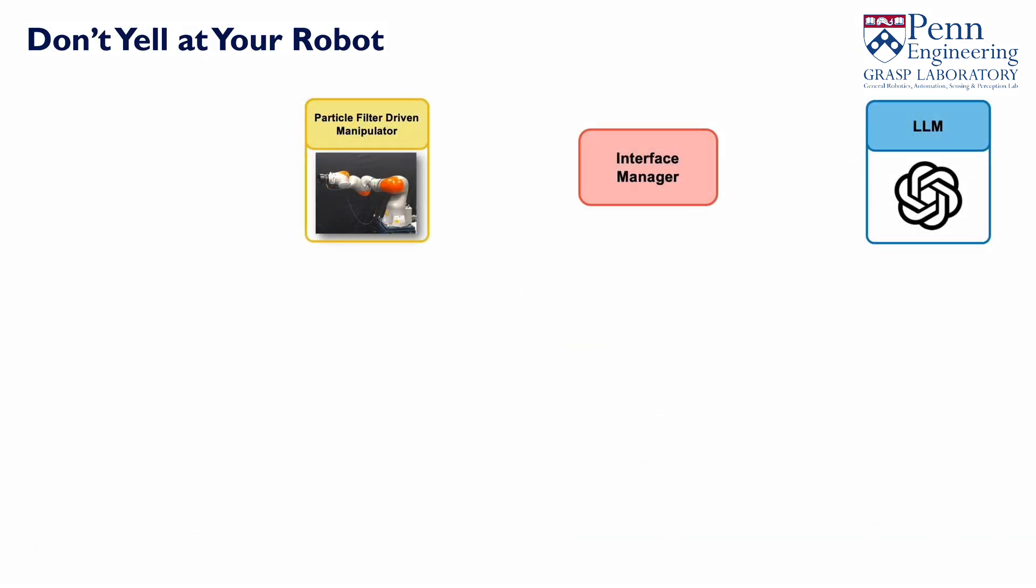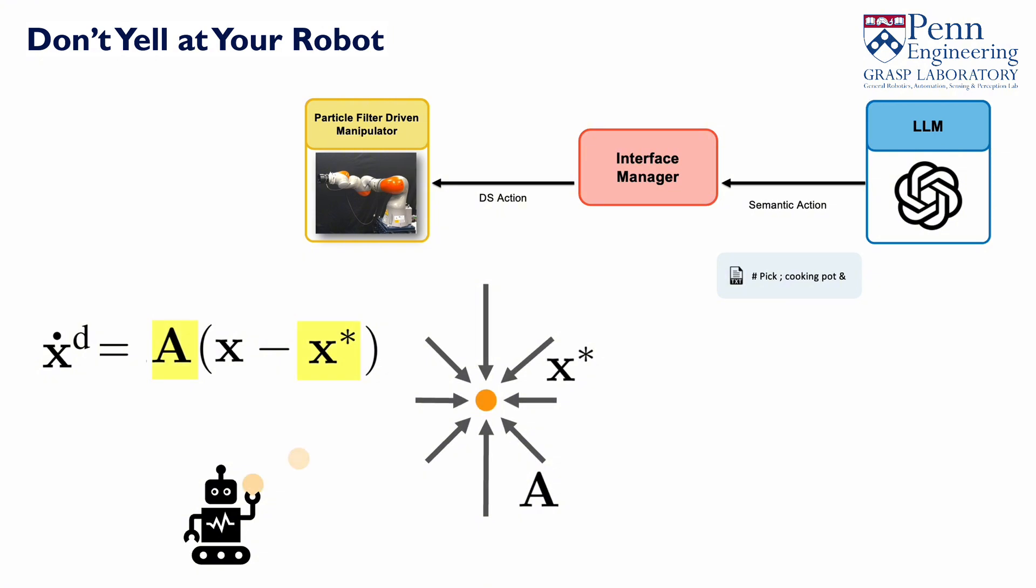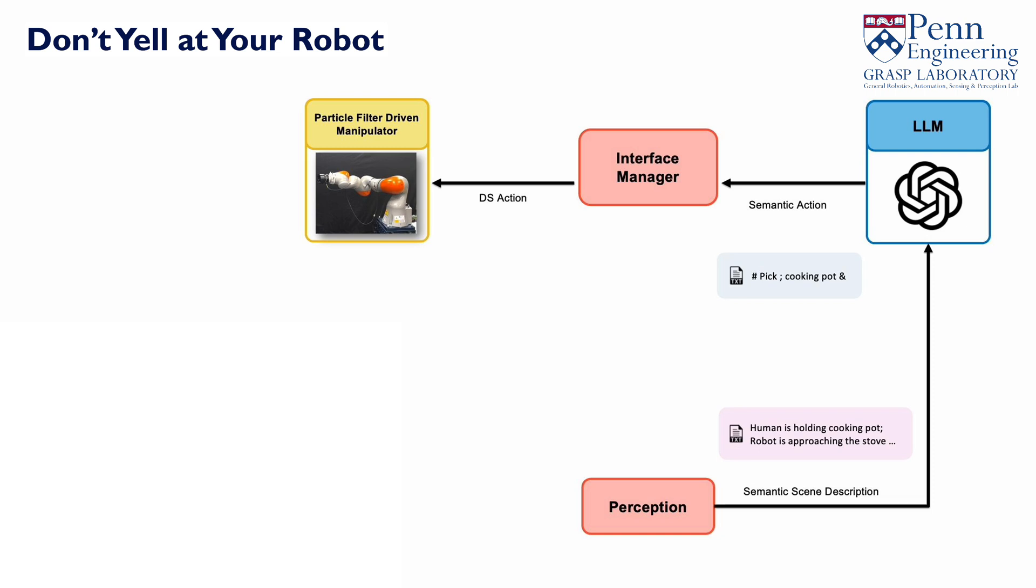Our system connects LLM and robot with an interface manager. Instead of relying on position commands, the robot carries out six DOF velocity vector field commands, or DS commands, based on a natural language description of the scene.